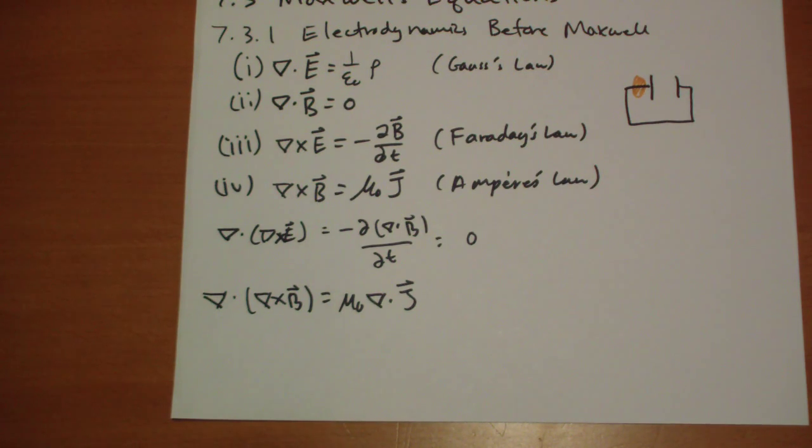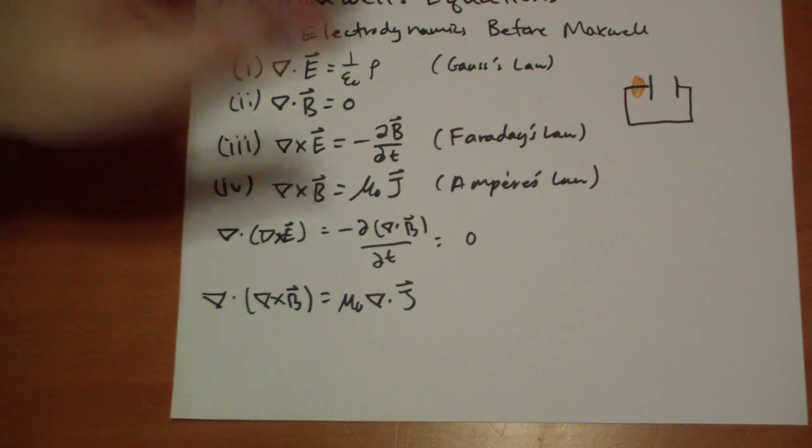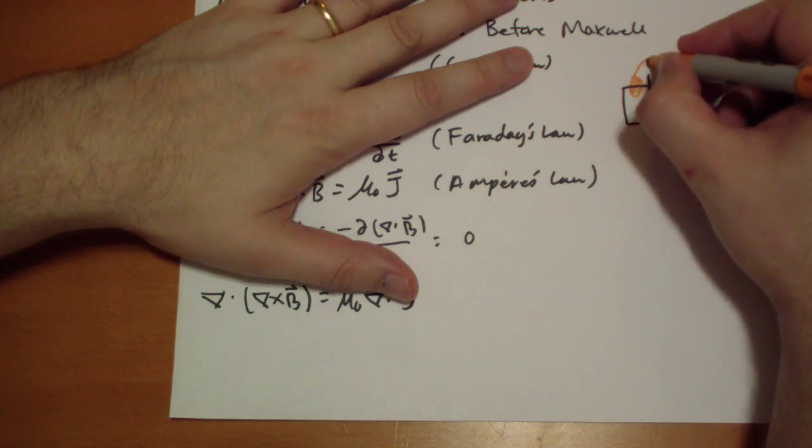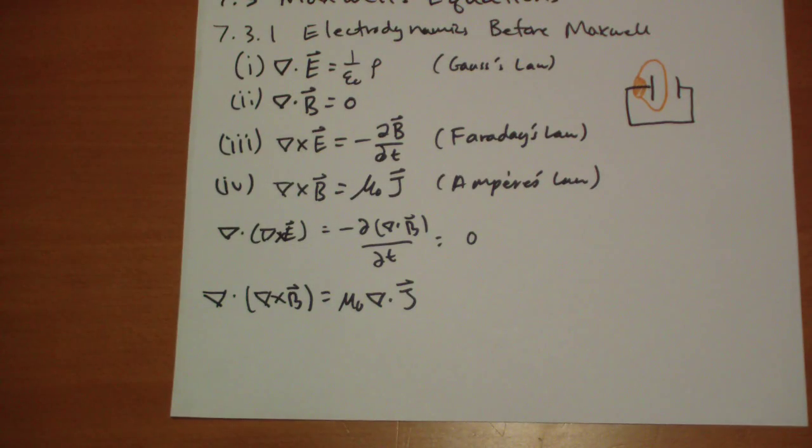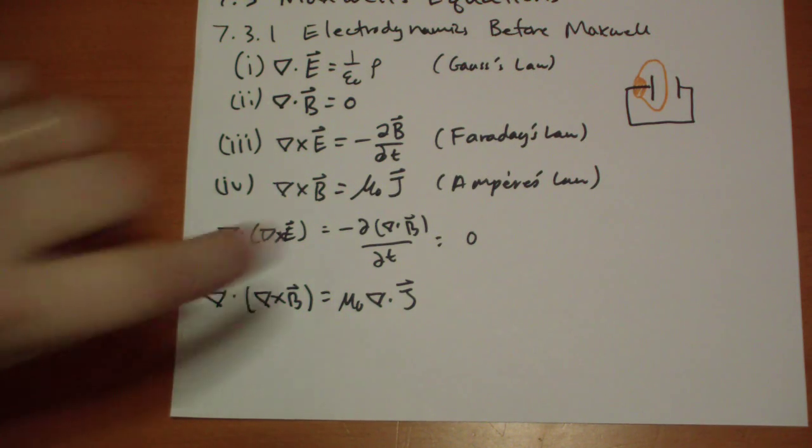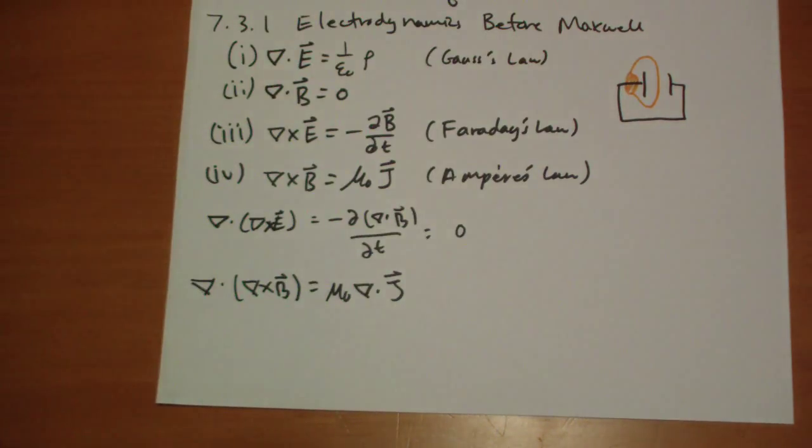But an astute observer might say, what if we drew the surface like this? So it didn't include a wire. What's the current flowing through that? The current flowing through that is zero, but indeed the magnetic field around the loop here is not zero. So something strange is happening.